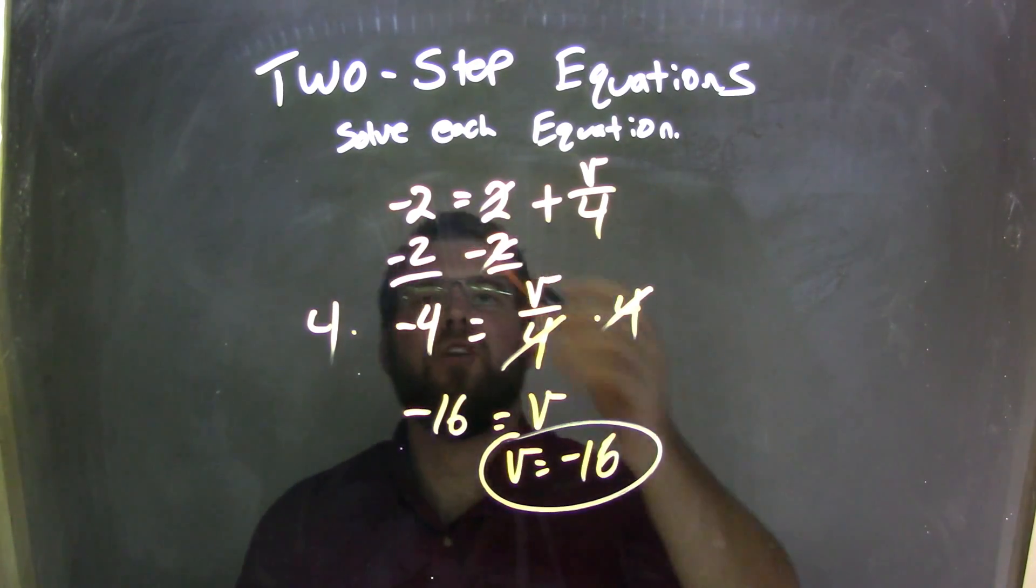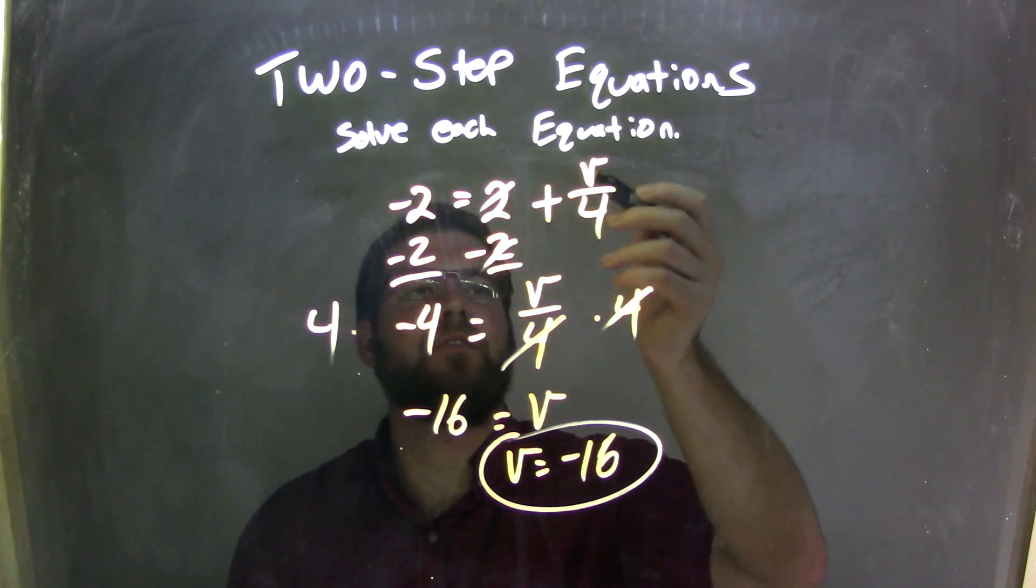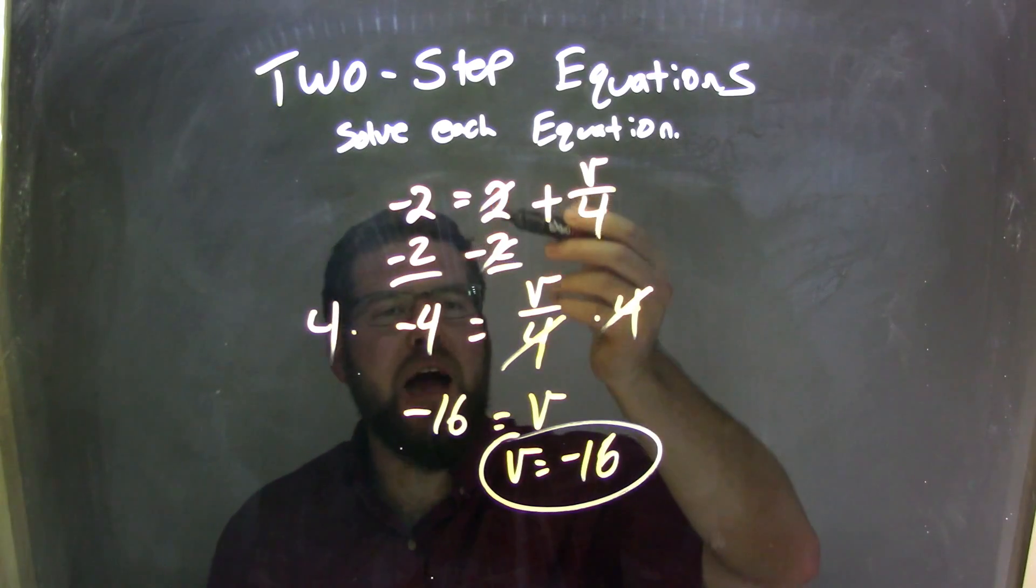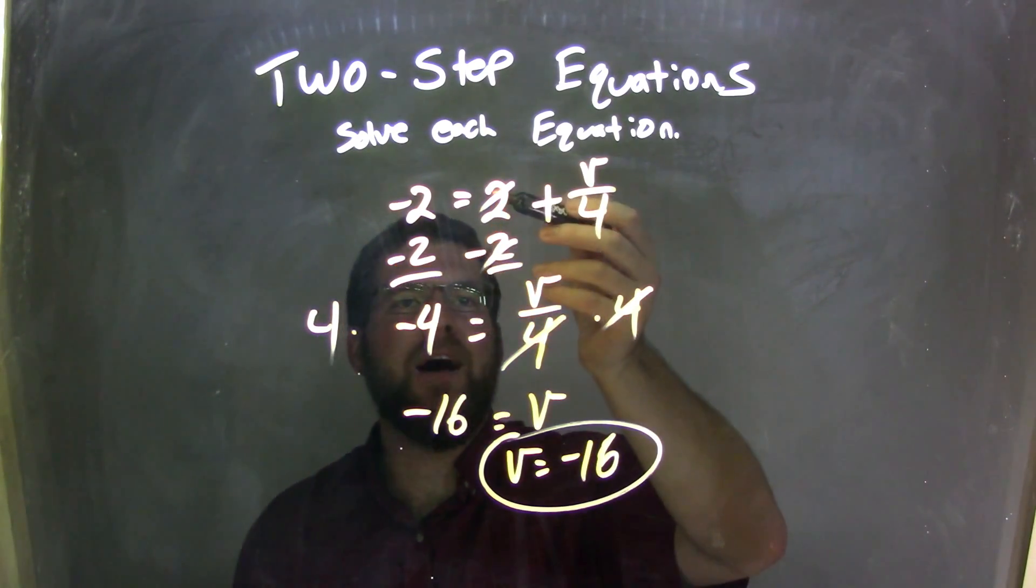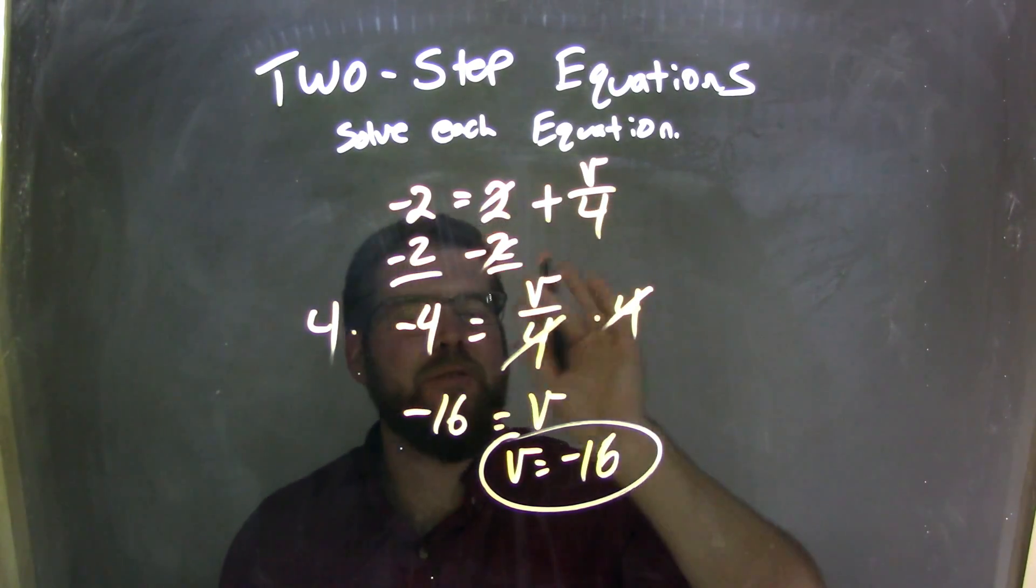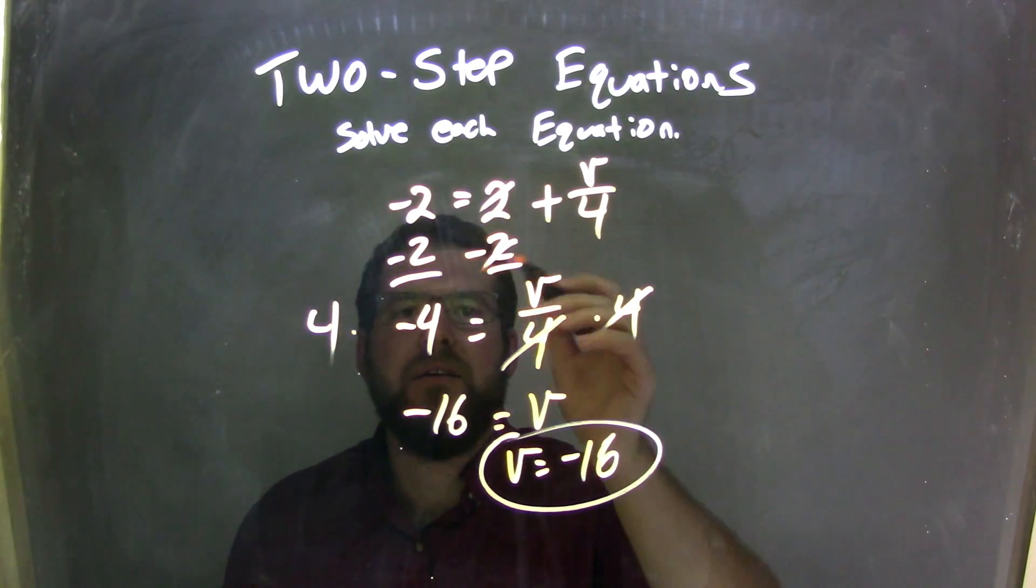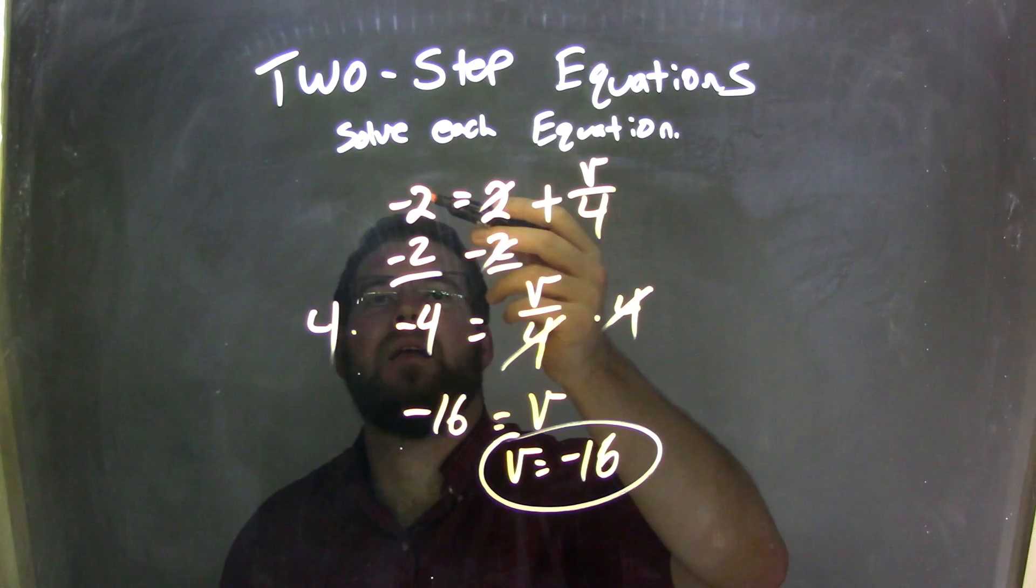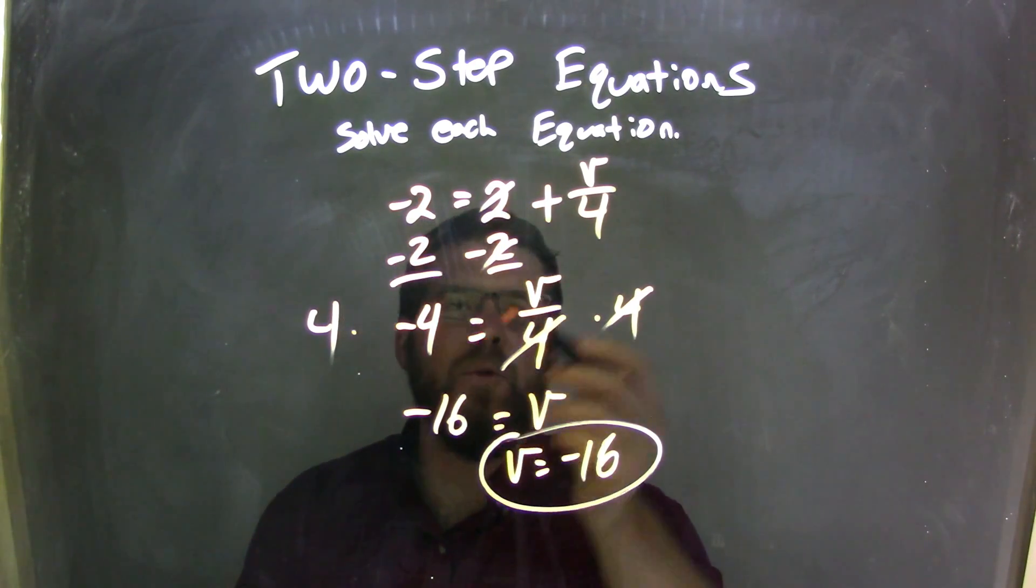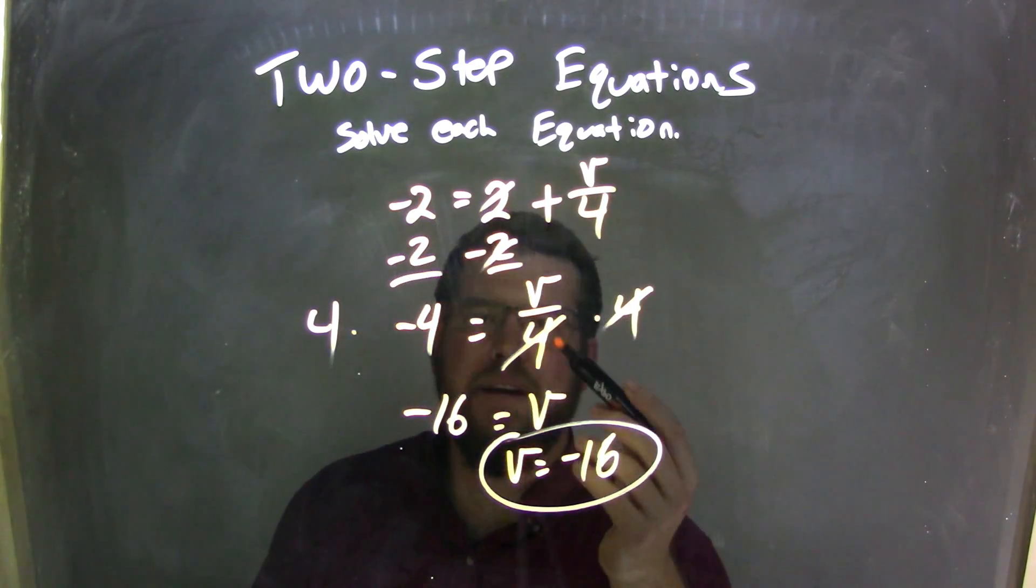So let's recap. We started with negative 2 equals 2 plus v over 4. I subtracted a 2 to both sides because we had a positive 2 there. Negative 2 is the opposite of that I'm adding to. Cancel out the 2's there. There's a lot of 2's in this problem as well. The negative 2 minus 2 came out to be negative 4 equals, and we're left with just a v over 4 here.